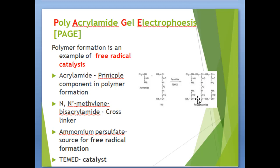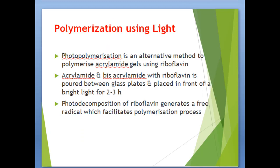The sulfate free radicals formed in this process help in the formation of polyacrylamide. Photo-polymerization is an alternative method to polymerize acrylamide gel using riboflavin. Acrylamide and bisacrylamide with riboflavin are poured between glass plates and placed in front of bright light for two to three hours. Photo-decomposition of riboflavin generates a free radical which facilitates the polymerization process.